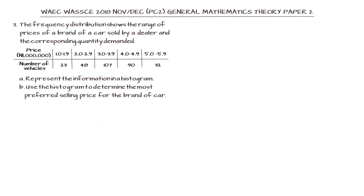In question number three, we are given the frequency distribution table that shows the range of prices of a brand of car and the corresponding quantity that was demanded. We are to represent this information in a histogram and use that histogram to determine the value of the most preferred selling price.